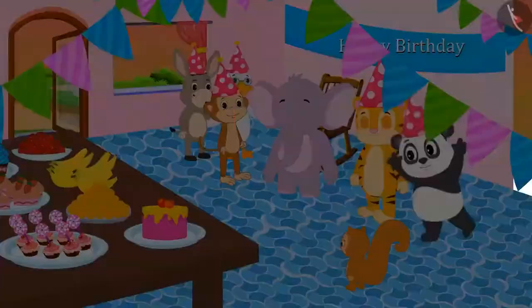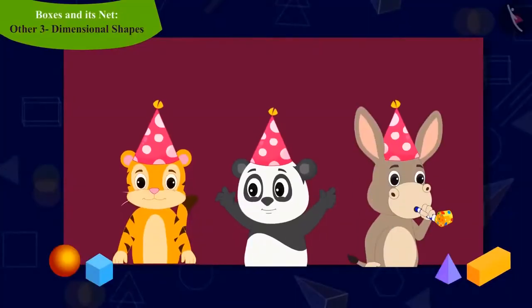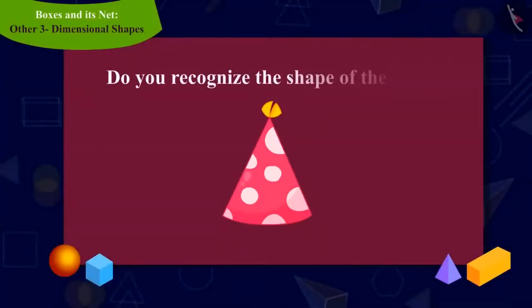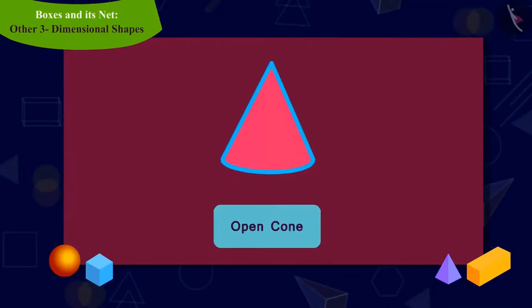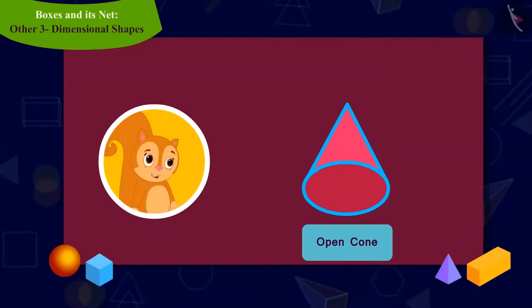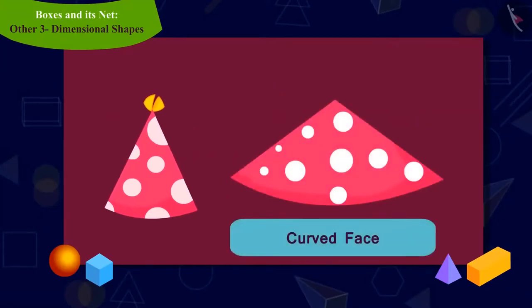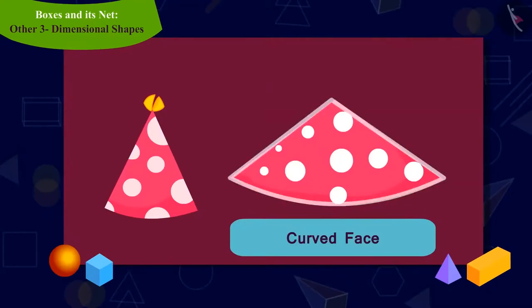Let's see what Chanda is doing now. Chanda now saw everyone in the party wearing a hat of this shape. She's wondering what shape this is and what the shape of its net will look like. Do you recognize the shape of the cap? This is an open cone. It is a three-dimensional shape which has only one curved surface. Chanda, in order to know the shape of the net of the open cone, took a hat and opened it. Kids, the shape of the net of an open cone looks like this figure.